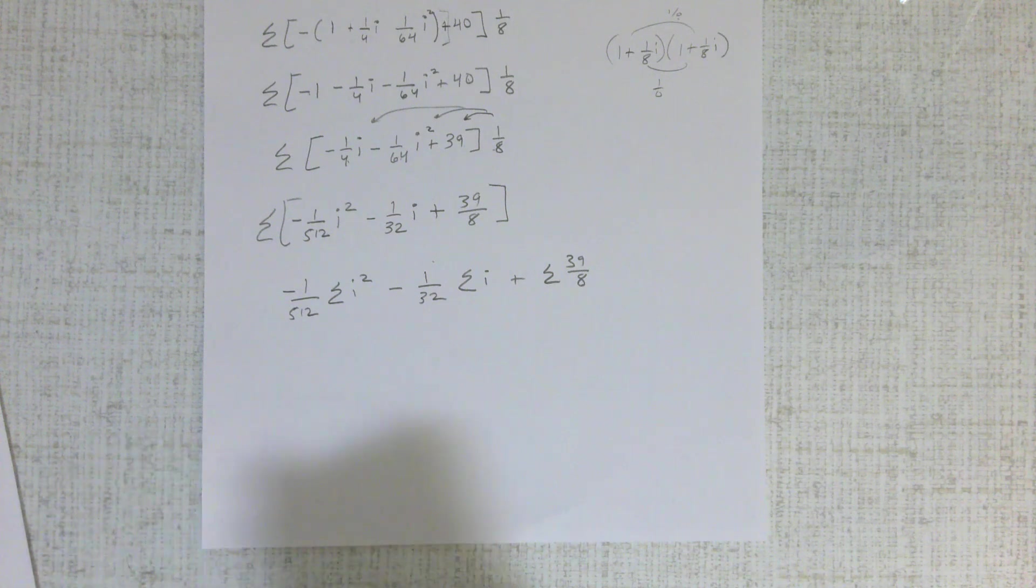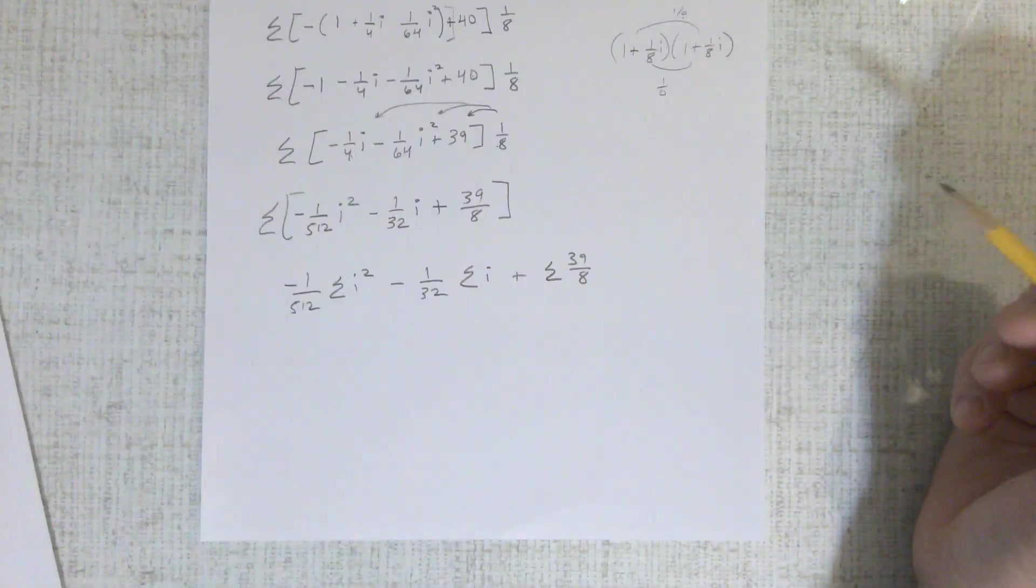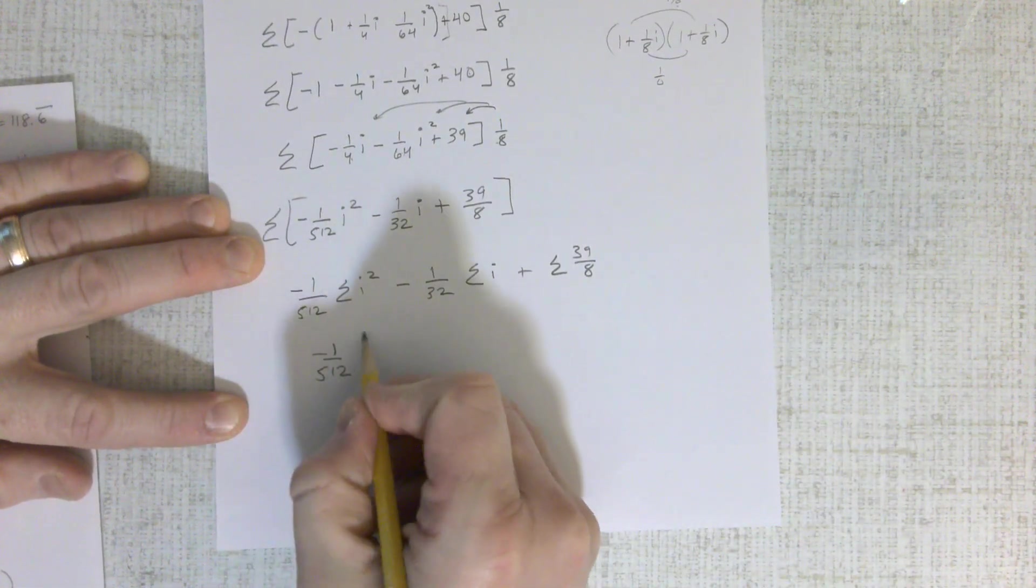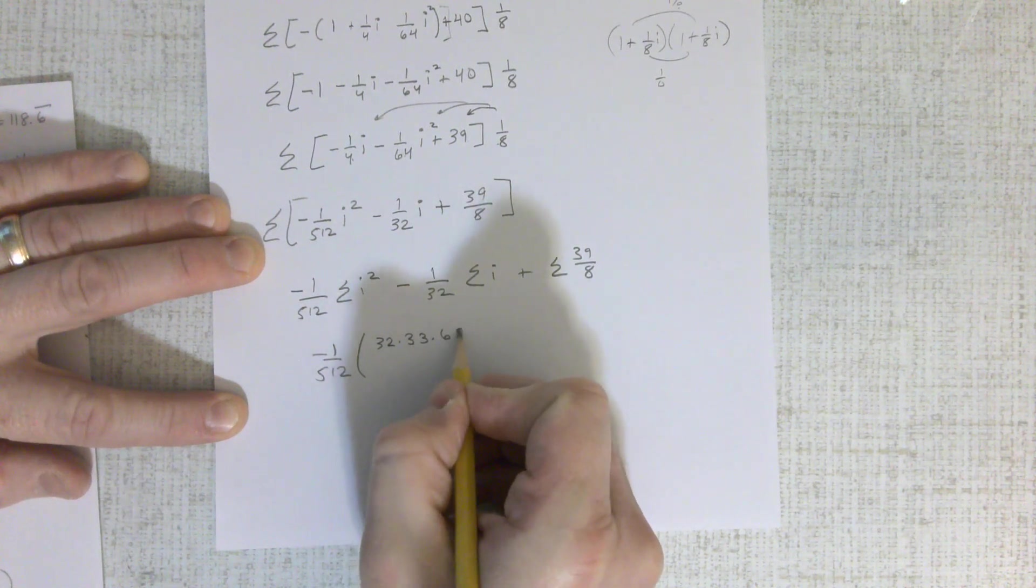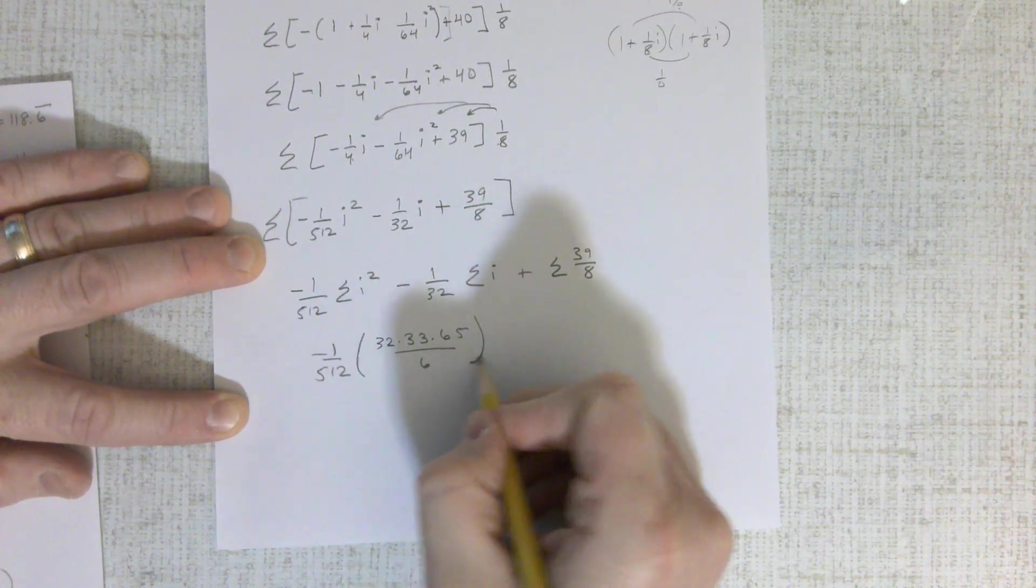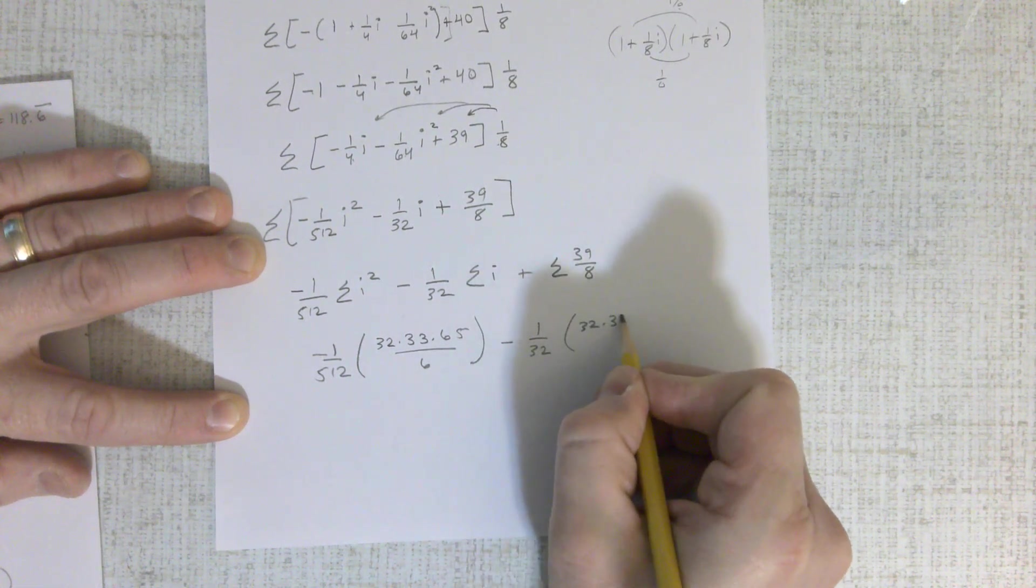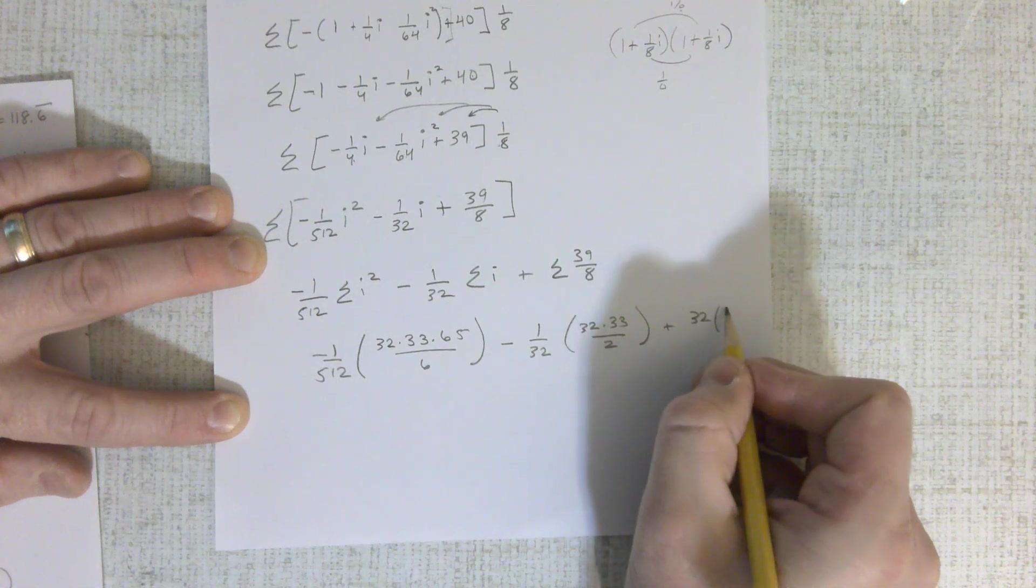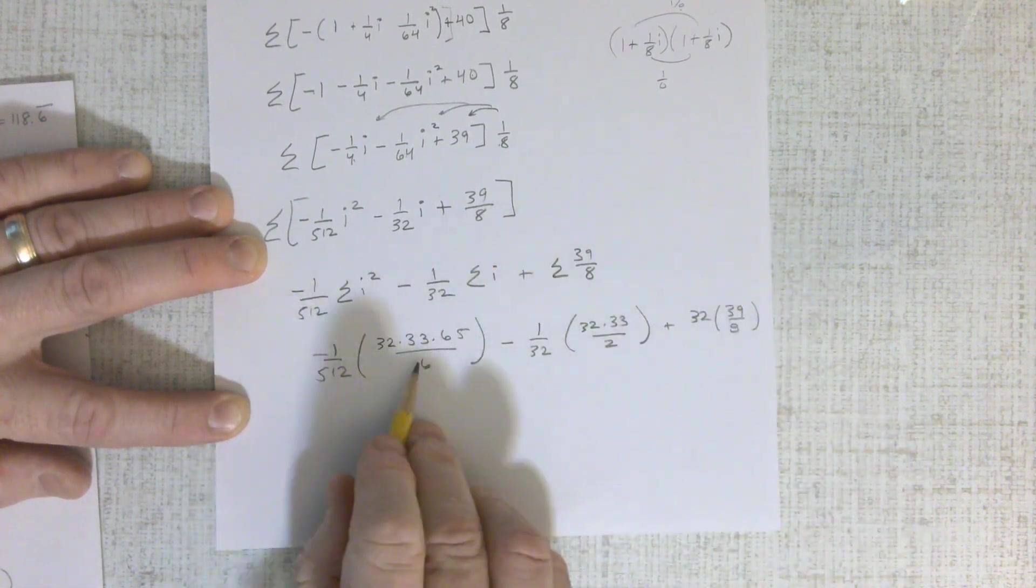Now we use our formulas. Now we use our formulas for the i squareds and the i's. And i squareds would be 32 times 33 times 65 over 6 minus 132, 32 times 33 divided by 2 plus 32 times 39 over 8.